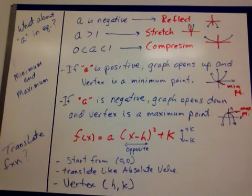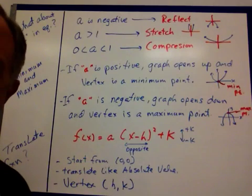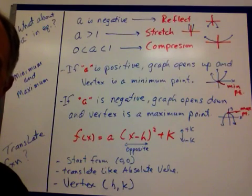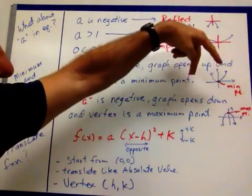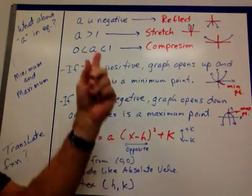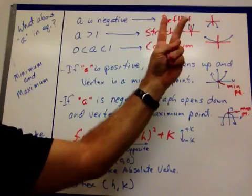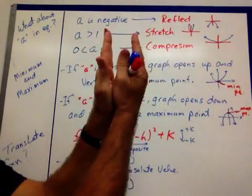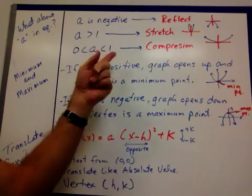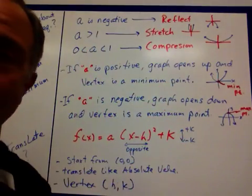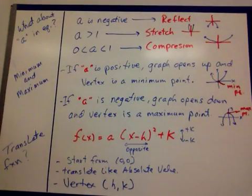The role of the a. What about a in the equation? It's just like absolute value. If the a is negative, you're going to reflect, you're going to open down instead of up. If a is bigger than 1, it stretches, it's that steepness, like a slope. And if a is between 0 and 1, it's a compression, you're flattening out, exactly like absolute value.